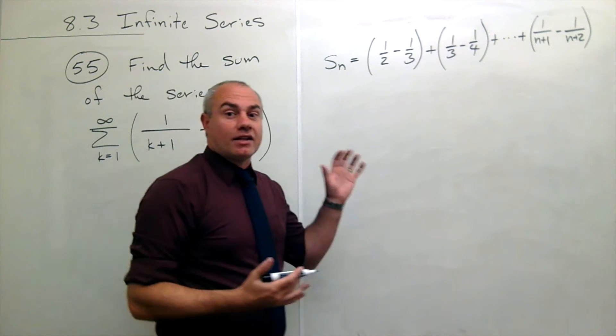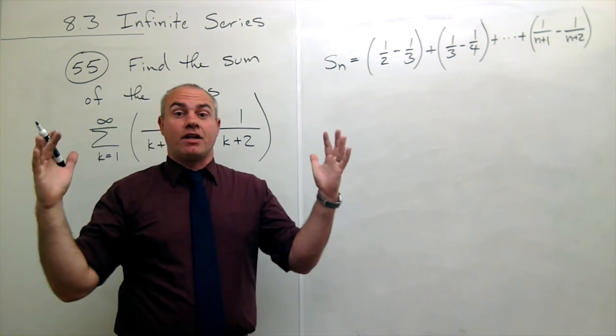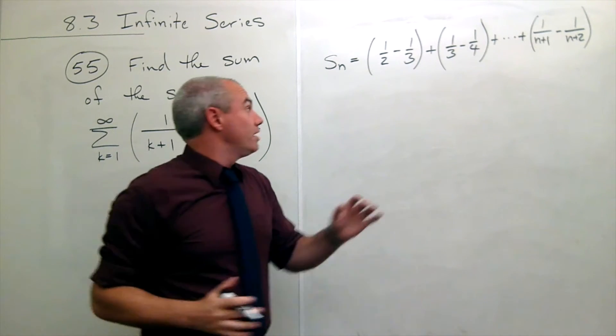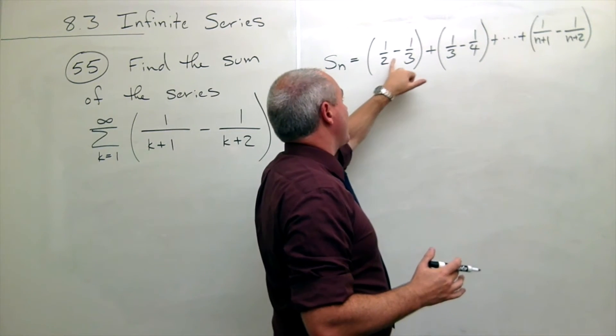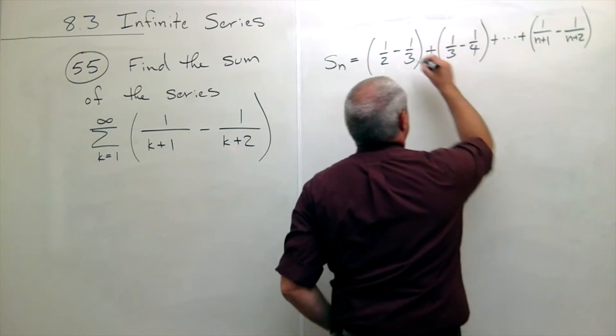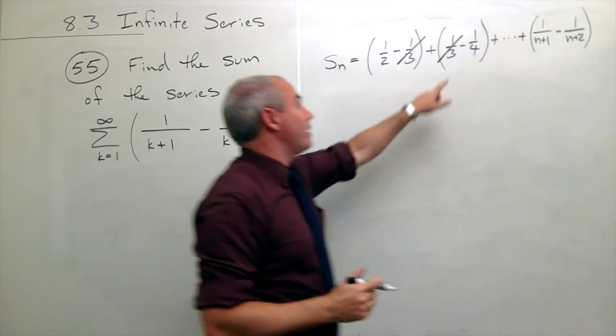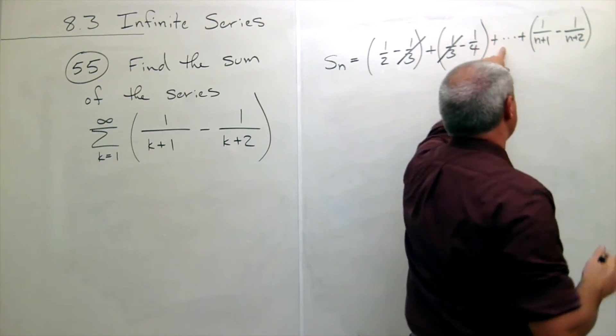And what I mean by telescoping is it kind of collapses in on itself, because I have a half and then I have minus a third and plus a third. Minus a third and plus a third, those cancel and they just go away. I also get minus a fourth, and the next term would be plus a fourth, then minus a fifth.